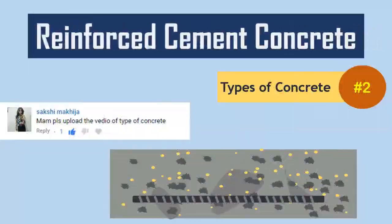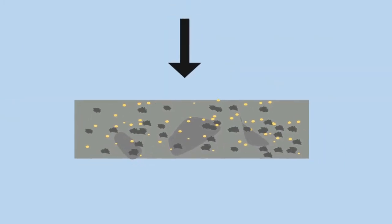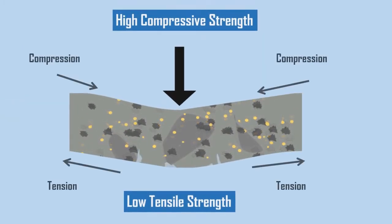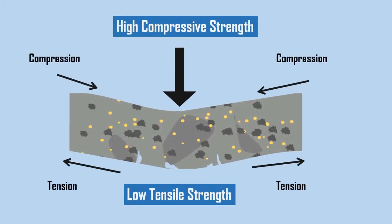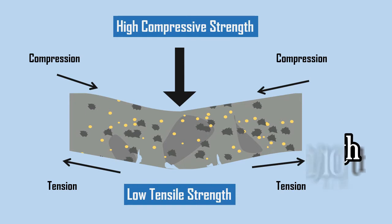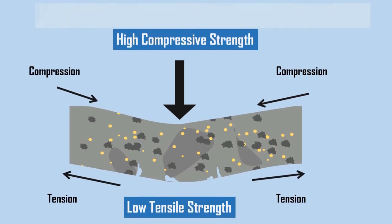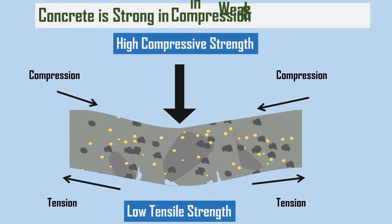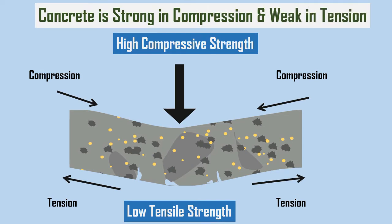Reinforced Cement Concrete. The hardened concrete is generally high in compressive strength, but its tensile strength is very low, which is generally approximately one-tenth of its compressive strength. We can say that concrete is strong in compression and weak in tension.